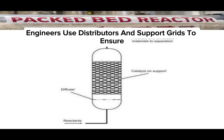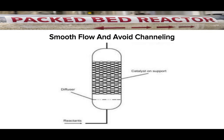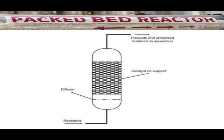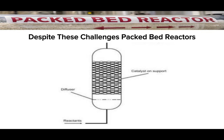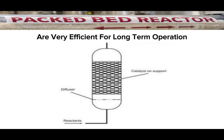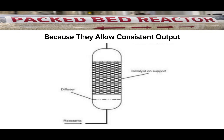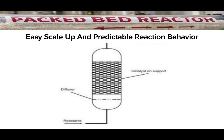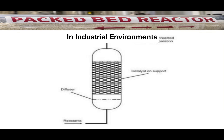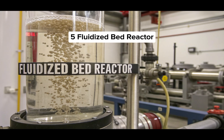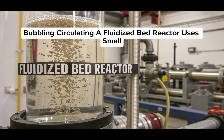Engineers use distributors and support grids to ensure smooth flow and avoid channeling. Despite these challenges, packed bed reactors are very efficient for long-term operation because they allow consistent output, easy scale-up, and predictable reaction behavior in industrial environments. A fluidized bed reactor uses small solid catalyst particles that are lifted and suspended by the upward flow of gas or liquid.